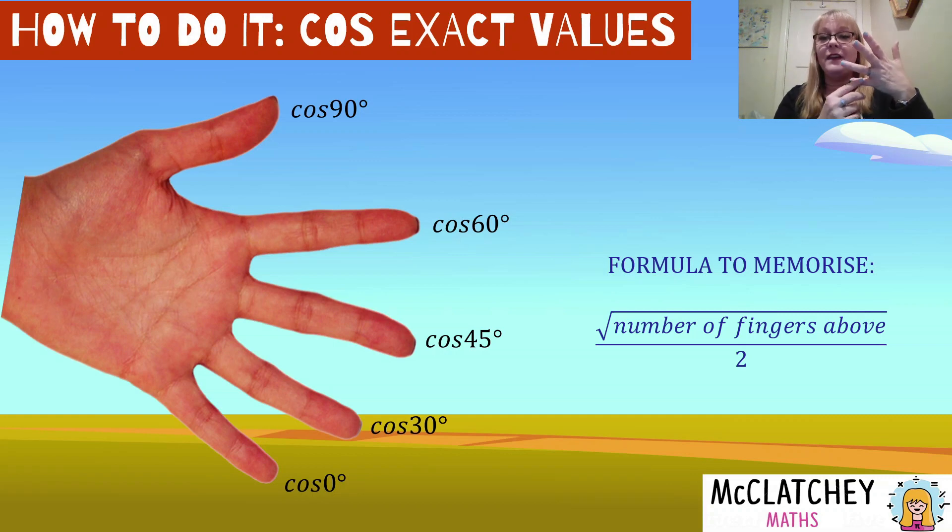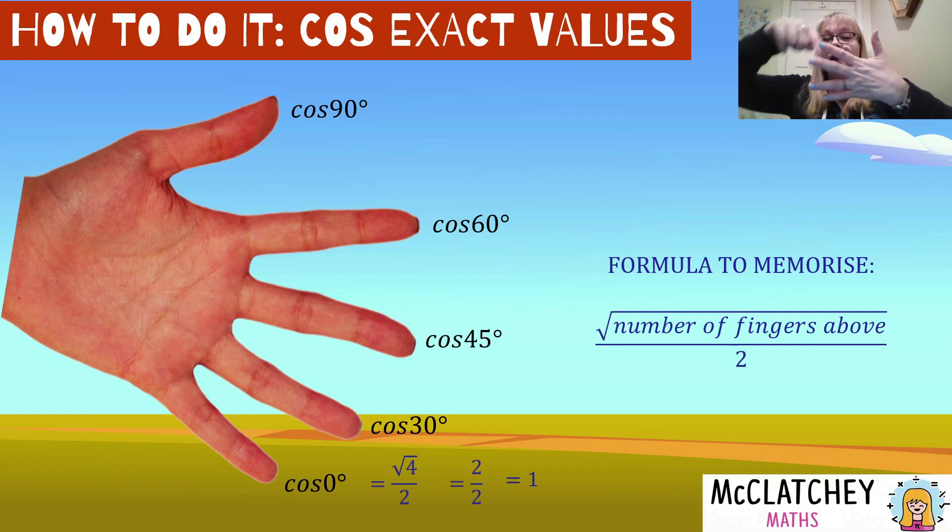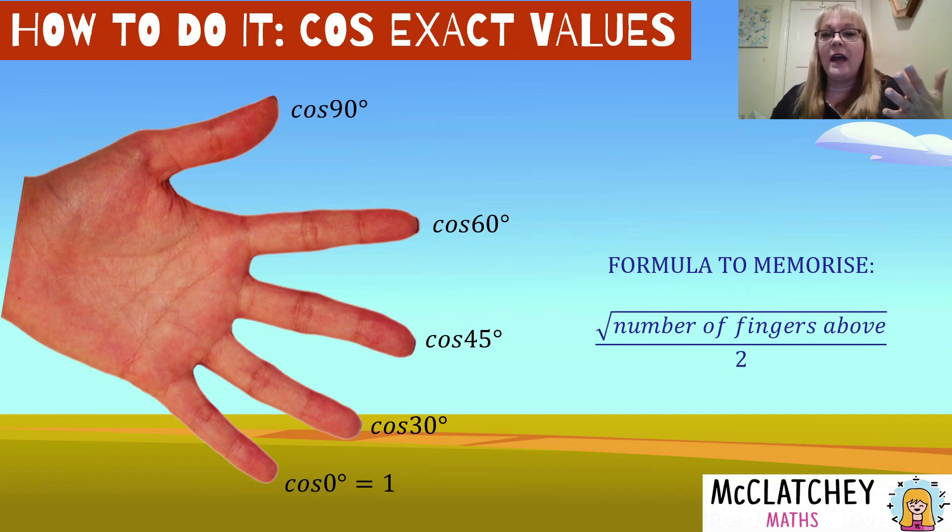Okay, let's start again with zero, our pinky finger. If we hold that one in, we're going to have the square root of four fingers above that finger, which is going to be the square root of four over two, which we know simplifies to two over two, and one. Basically, all the values we had all the way up for sine, it's going to be in reverse for cosine, that's an easy thing to remember. But just need to know how to use the rules.